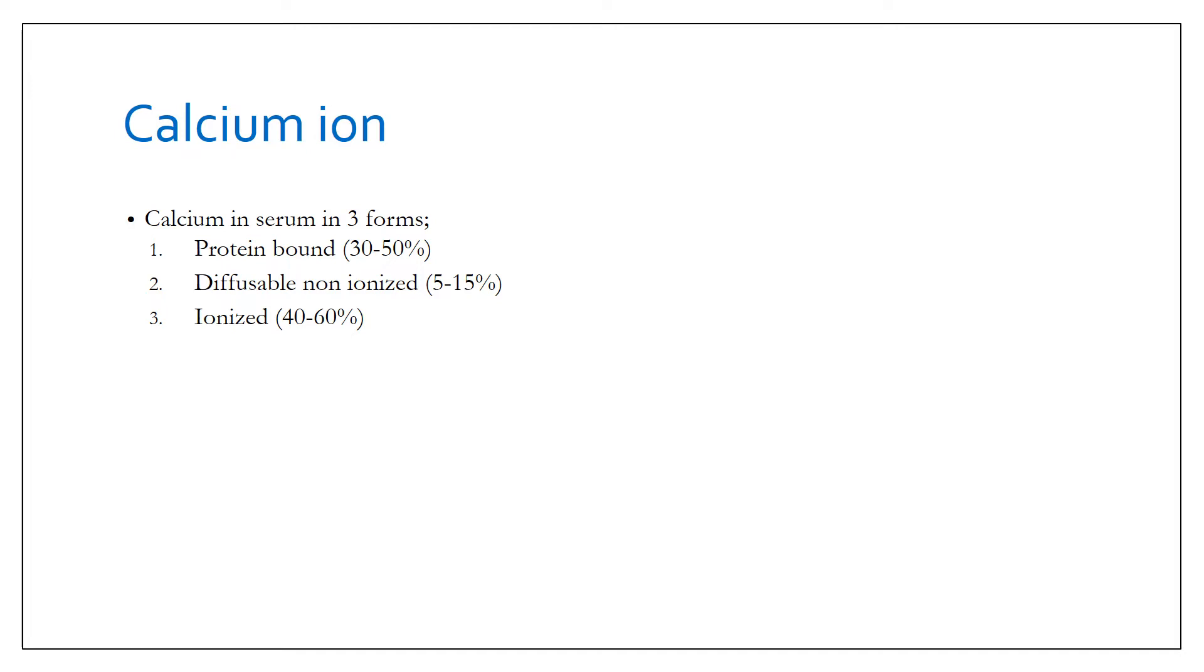The diffusible non-ionized form is up to the extent of 5 to 15%, which is complexed with serum anions like phosphate, citrate, and sulfates. And the ionized form, which is the physiologically active form, constitutes around 40 to 60%.